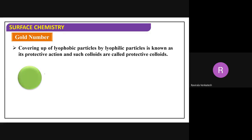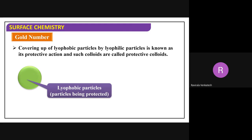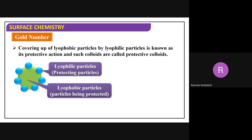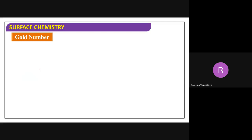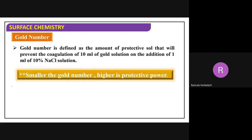Gold number: the lyophobic particle is protected by lyophilic colloids forming a protective layer around it. The gold number is defined as the amount of protective sol (lyophilic colloid) required to prevent the coagulation of 10 ml of gold solution upon addition of 1 ml of 10% NaCl solution.